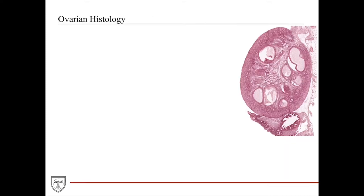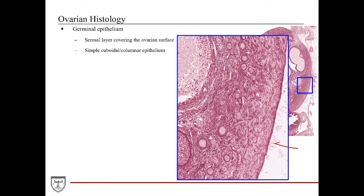Looking at these structures histologically at higher magnification, the outermost layer of the ovaries — even external to the tunica albuginea — shows a single layer of simple cuboidal cells that surround the ovarian surface. This structure is called the germinal epithelium, which is actually a serosal layer that drapes over the ovaries. Here, the serosal cells are not squamous but instead are cuboidal to columnar in shape. At higher magnification of the external surface, we can see the loosely defined tunica albuginea, and outside of that, this simple cuboidal epithelial tissue — the germinal epithelium, also known as the serosal layer.